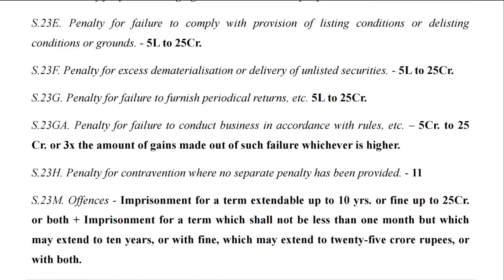There are also some other penalties for offenses under Section 23M, which include imprisonment for a term extendable up to 10 years, or fine up to 25 crore rupees, or both; and imprisonment for a term not less than 1 month but which may extend to 10 years, or with fine which may extend to 25 crore rupees, or both.